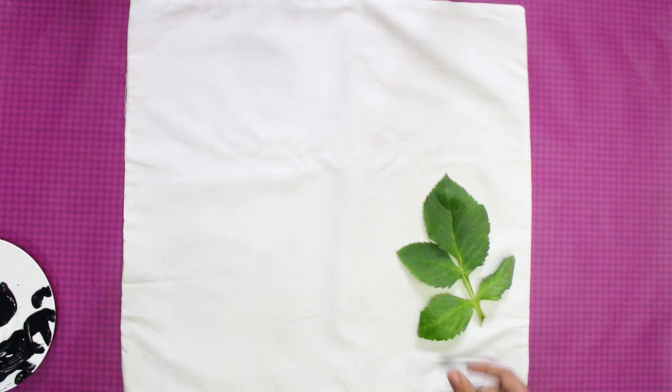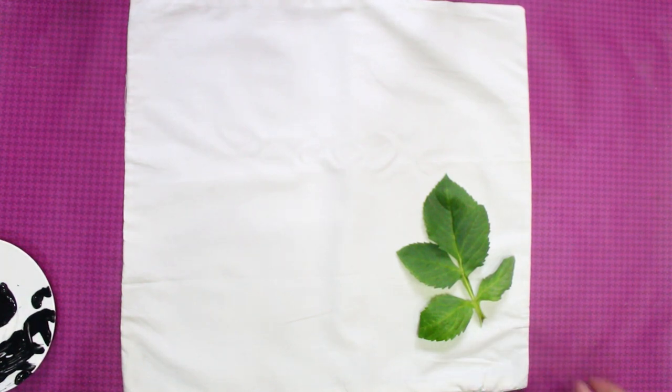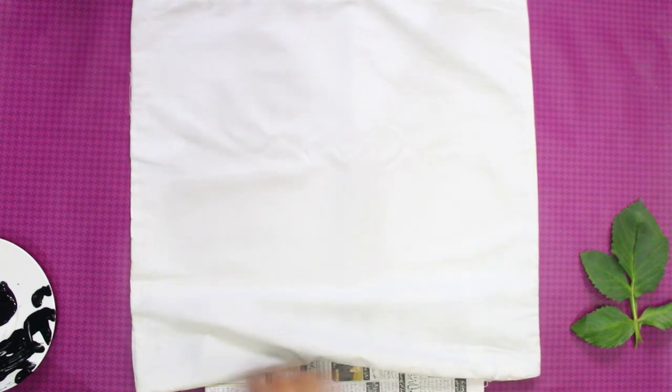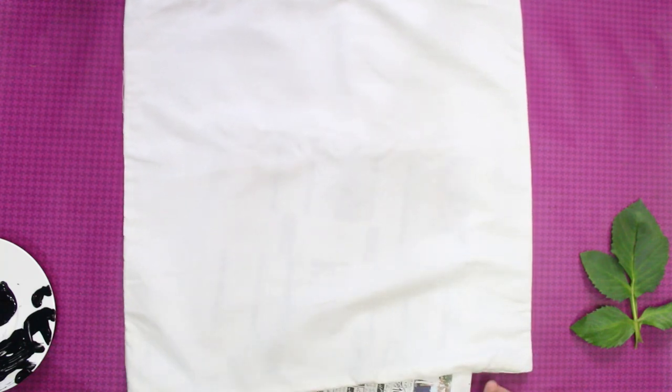For the second one, we are going to use leaf stamps. First, secure the cushion with newspaper.